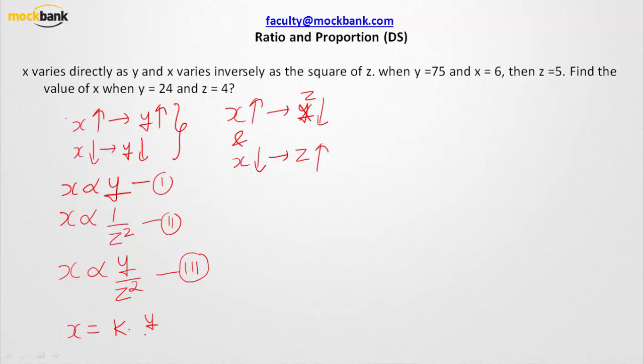That is what you need to do - say k times y over z square. Whenever we have to eliminate the proportionality, we need to bring a constant into the picture. That is what we have done here.